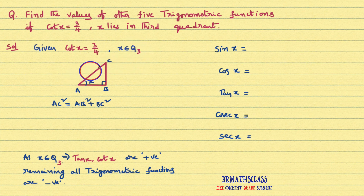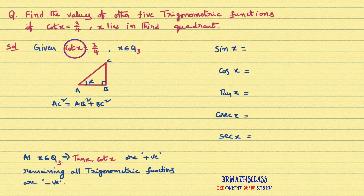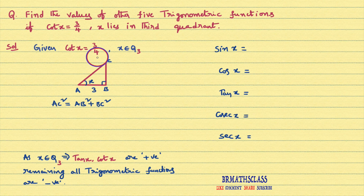First I will consider a right angle triangle. From the definition of cotangent, cot x is defined as adjacent side by opposite side. The adjacent side is 3 and the opposite side is 4.